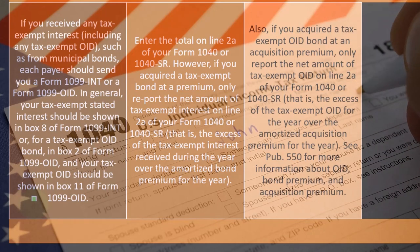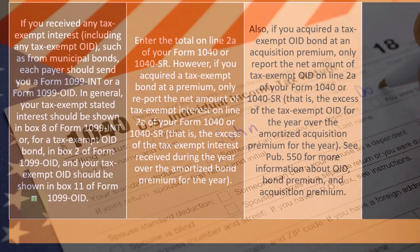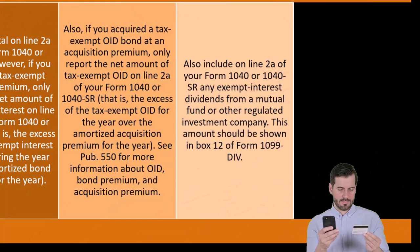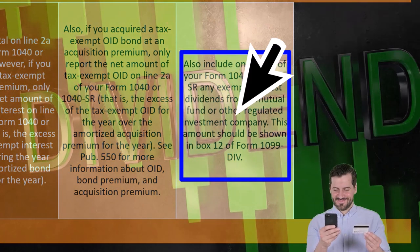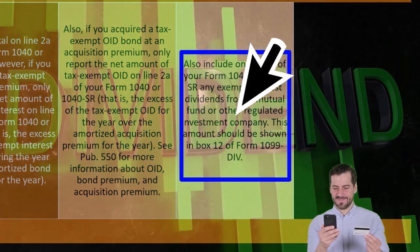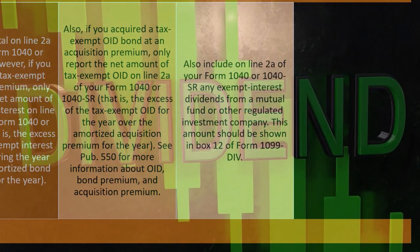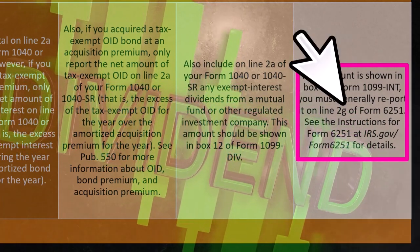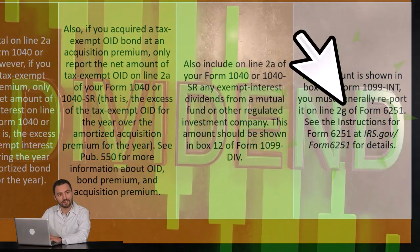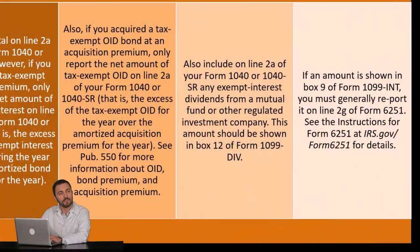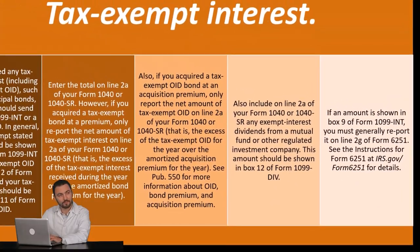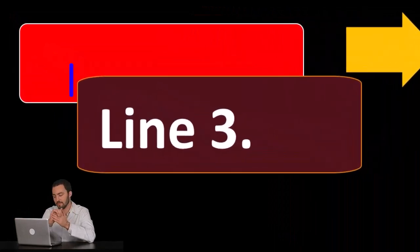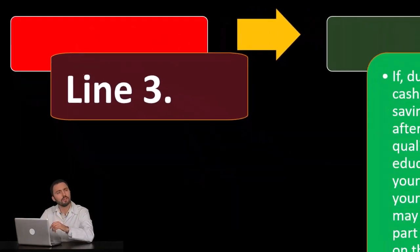For more information on OID, bond premium, and acquisition premium, see Publication 550. Also include on line 2a of your form 1040 or 1040-SR any exempt-interest dividends from a mutual fund or other regulated investment company; this amount should be shown in box 12 of form 1099-DIV. If an amount is shown in box 9 of form 1099-INT, you must generally report it on line 2g of form 6251 — see the instructions for form 6251 if you're in that situation.